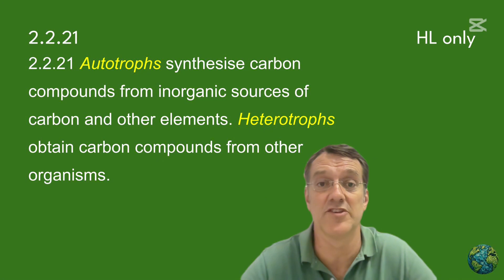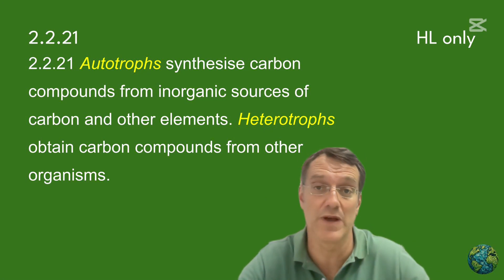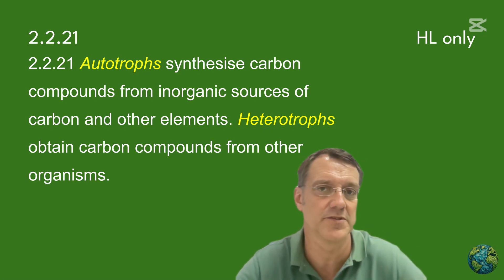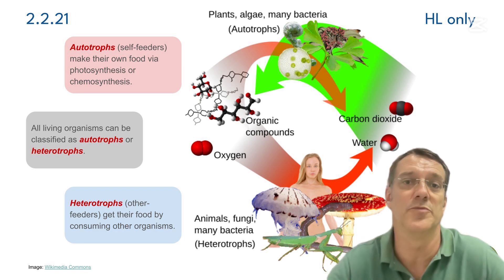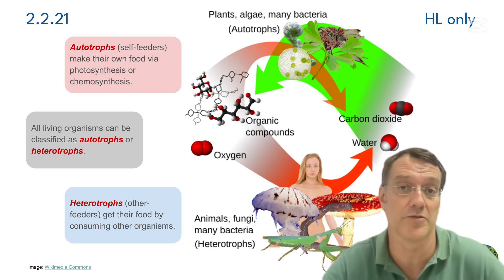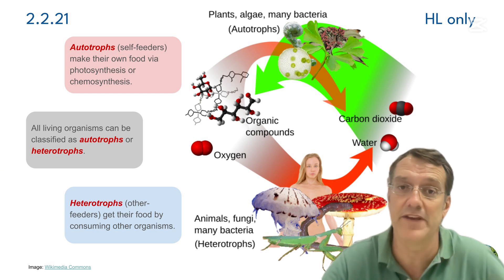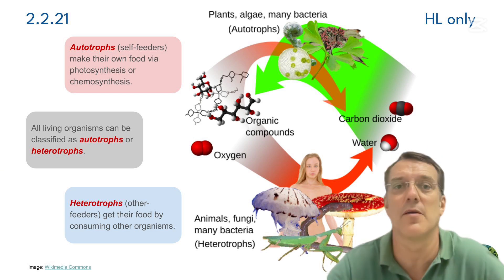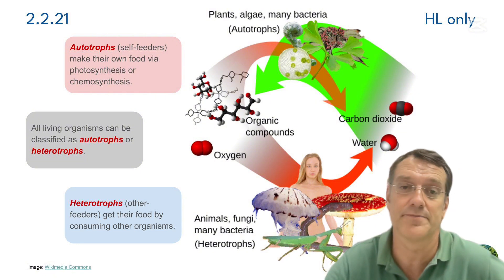First we're going to explore how organisms acquire carbon compounds, which raises interesting questions about resource use and ecosystems. All living organisms can be classified as either autotrophs or heterotrophs. Autotrophs are the self-feeders — they synthesize carbon compounds from inorganic sources and other elements.